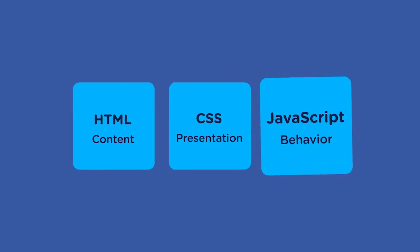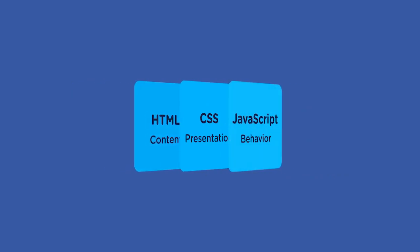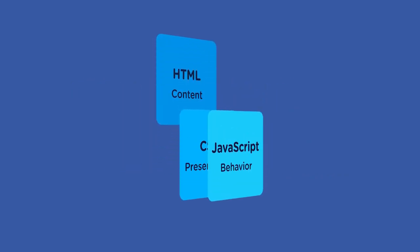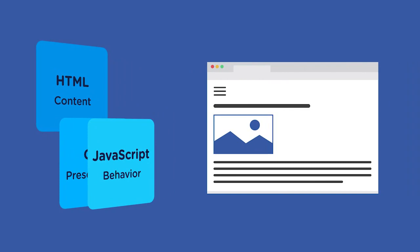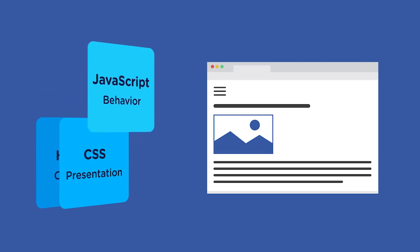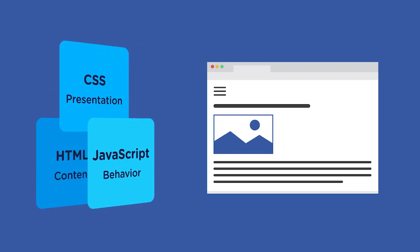As you might have learned in previous courses, a web page is made up of three different layers that work together to deliver an experience to the user. There's a content layer, a presentation layer, and a behavior layer. The content layer is HTML, the structural foundation or outline of a web page. The behavior layer is normally handled by JavaScript, which provides real-time user interaction. And CSS is what handles the presentation layer of a web page, controlling the appearance of our HTML.